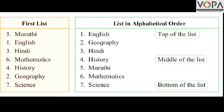List in alphabetical order. First: English. Second: Geography. Third: Hindi. Fourth: History. Fifth: Marathi. Sixth: Mathematics. Seventh: Science.